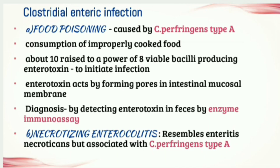There are mainly four Clostridial enteric infections. The first is food poisoning, which occurs when we eat improperly cooked food. About 10 to the 8th viable vegetative bacilli are required to initiate the infection. Once this many bacteria enter, they release enterotoxin, initiate the infection, and form pores in the intestinal mucosal membrane. Food poisoning is caused by Clostridium perfringens type A, diagnosed by detecting the enterotoxin using enzyme-linked immunoassay.